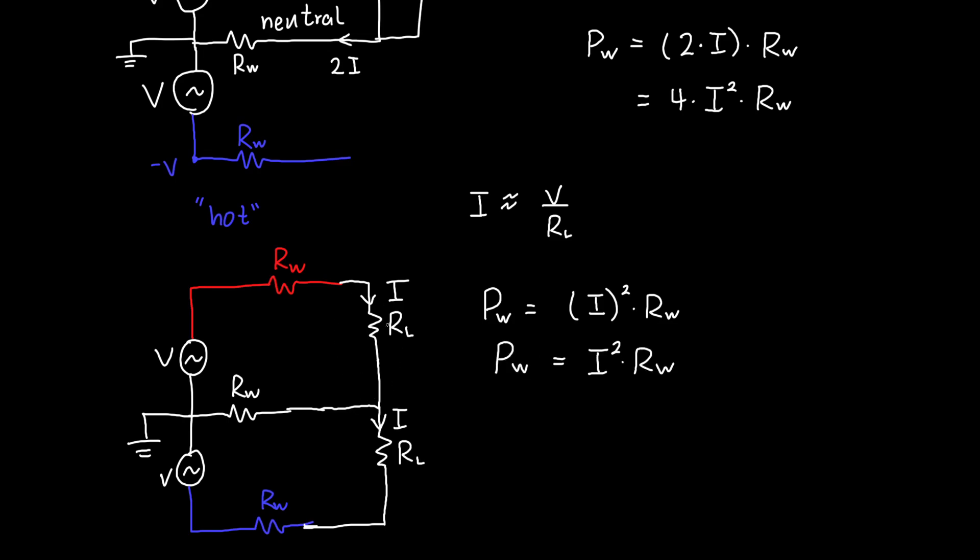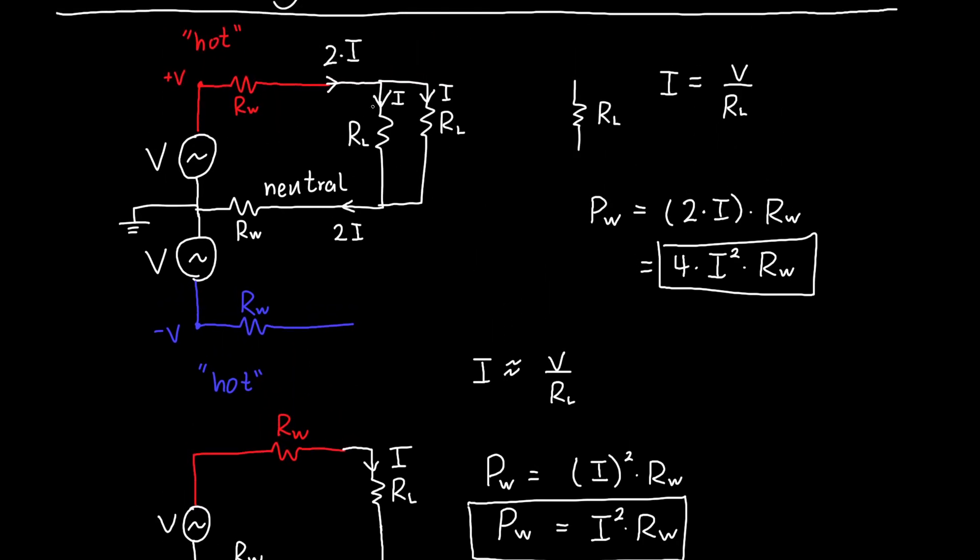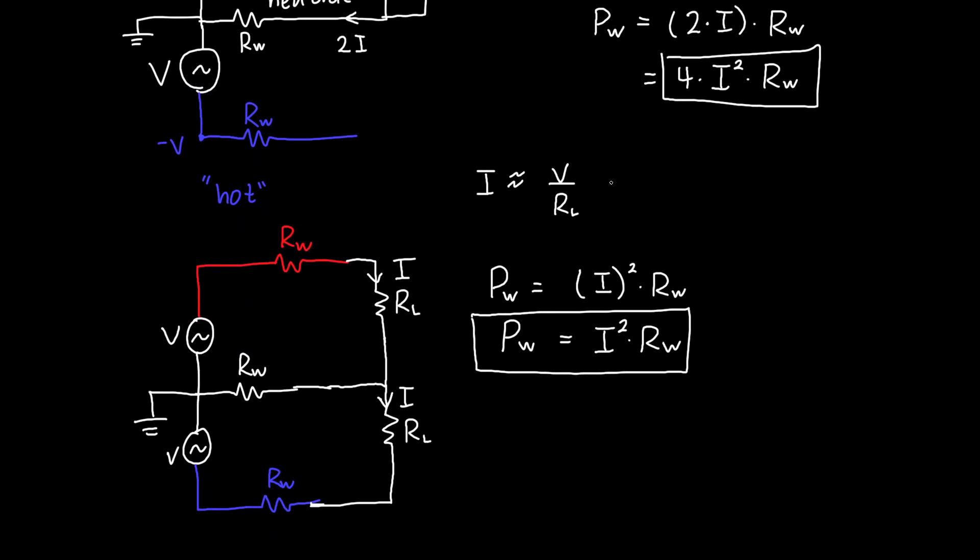So the power is I² times RW. But look at this—in the case where we have one on the top and one on the bottom, our power dissipated in each wire is a quarter of that in the case where we had both loads on the same circuit. This means we have less power dissipated in our wires.